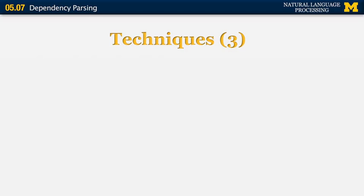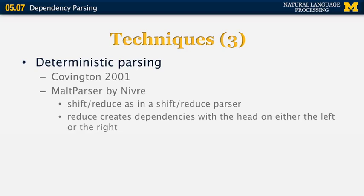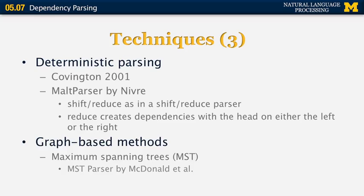A third category is based on deterministic parsing, introduced by Covington and more recently the MALT parser by Joachim Nivre and colleagues. The MALT parser is very similar to a shift-reduce parser for context-free grammars. The reduce operator creates dependencies with the head on either the left or right, creating dependency arcs in both directions. There are also graph-based techniques, specifically maximum spanning trees, pioneered by McDonald and Pereira and others around 2005.